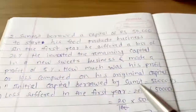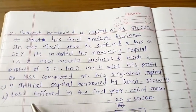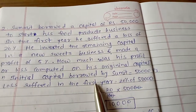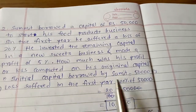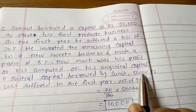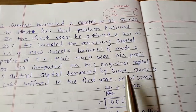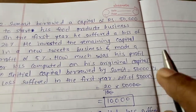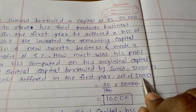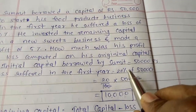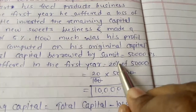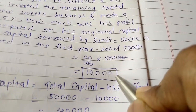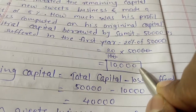The initial capital borrowed by Sumit is 50,000 rupees. In the first year, the loss was 20% of 50,000. Loss suffered in the first year equals 20% of 50,000, that is 20 upon 100 into 50,000, which equals 10,000 rupees loss. So now how much money does he have remaining?